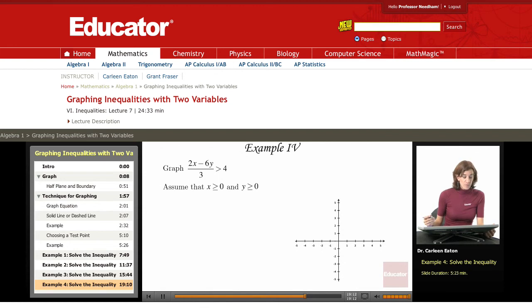For example 4, we're being asked to graph 2x minus 6y divided by 3 is greater than 4. And we have to assume that x is greater than or equal to 0 and y is greater than or equal to 0. So we have restrictions that x and y are both positive, which is going to affect our graph.